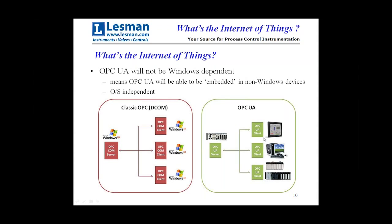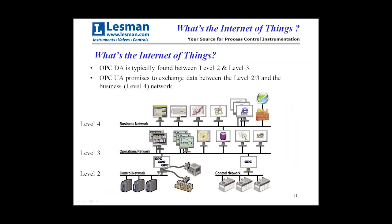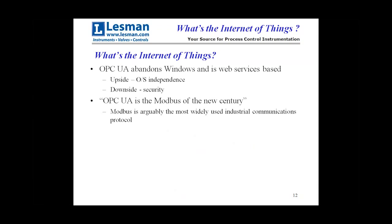OPC UA also promises to boost connectivity from Levels 2 and 3 up to the business network at Level 4 — which will please the people who pay for this, because they want reports that summarize what's happening to keep track of their business. There are some security concerns raised about how to avoid getting hacked. There was a statement out there that OPC UA is the Modbus of the new century — and given that Modbus is probably the most widely used industrial communications protocol, that's quite a claim.